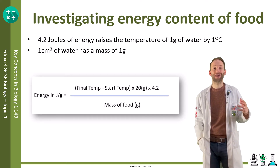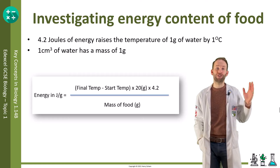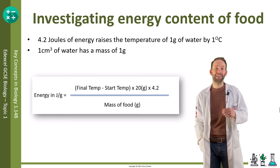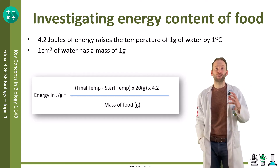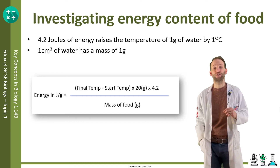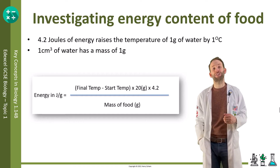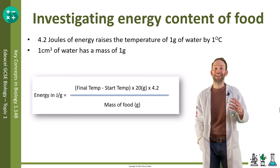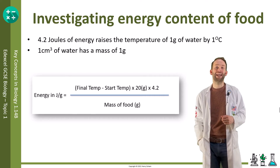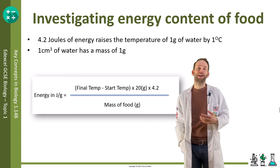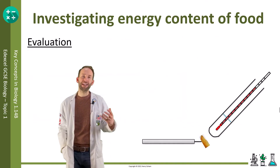We can use the following equation to work out the energy: change in temperature × 20 (the mass of water in grams) × 4.2, divided by the mass of food in grams. That will tell us how much energy is in that food.